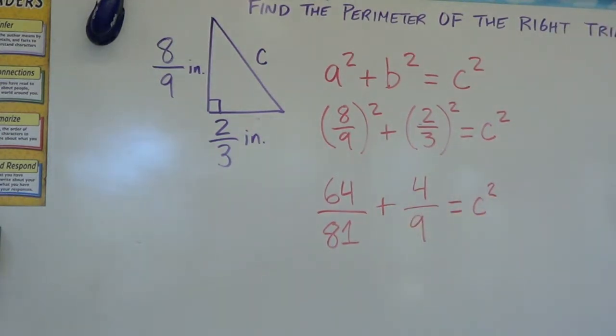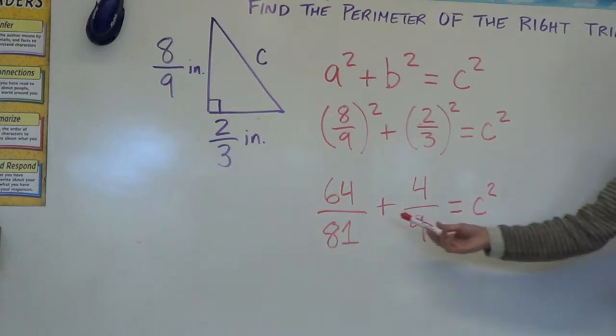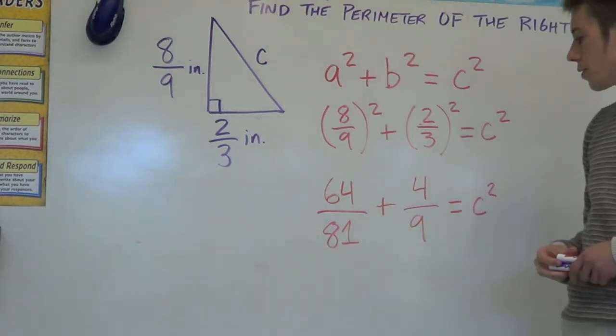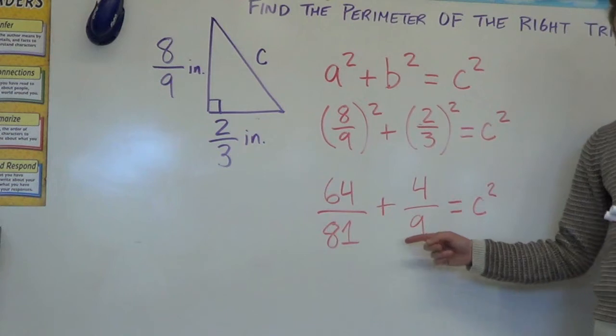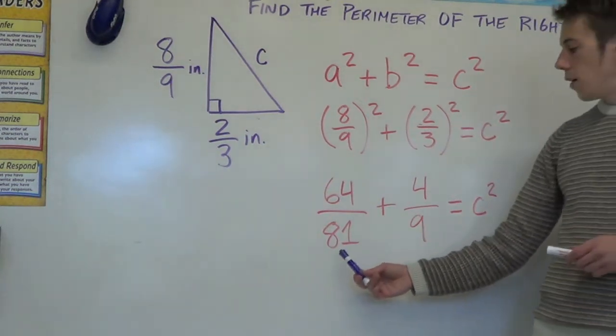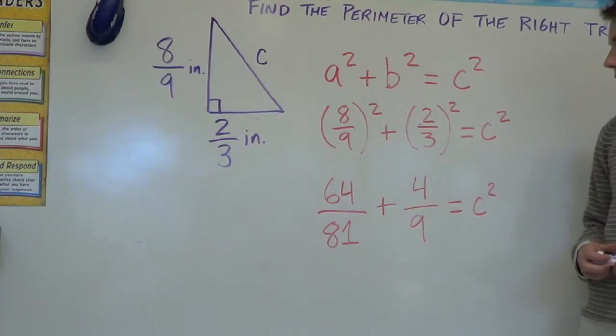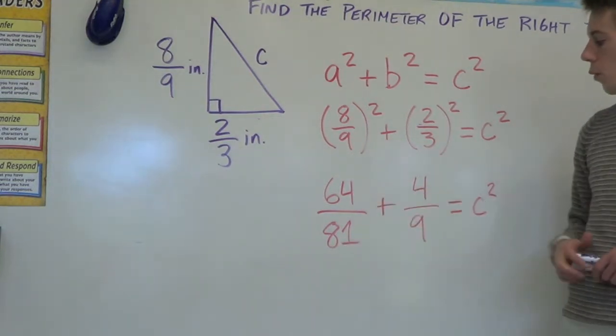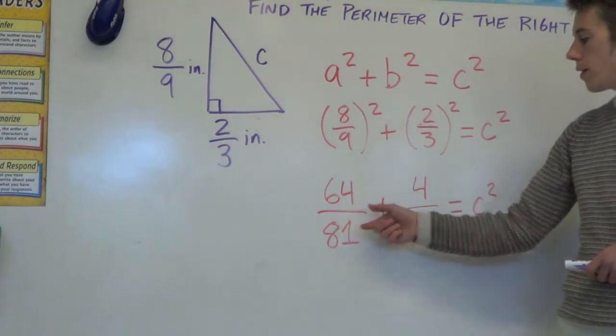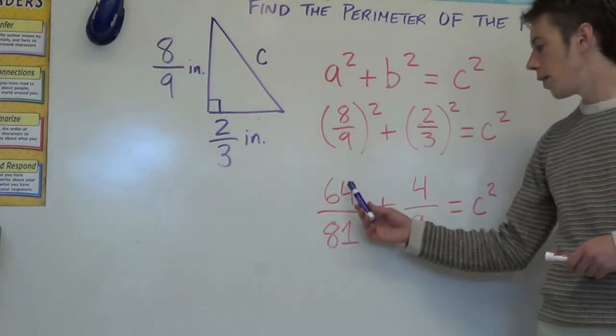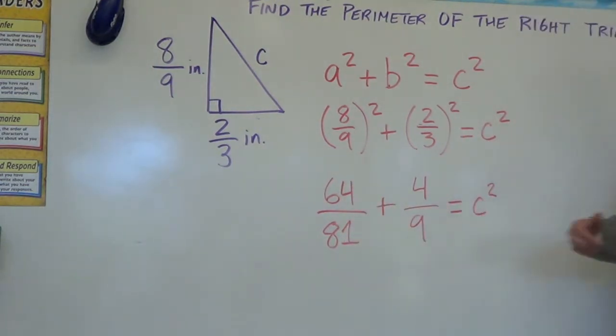When we get to this step, we have to add these two fractions, but they don't have a common denominator. Now, 81 is a multiple of nine. So if 64 were divisible by nine, we could simplify this to have nine on the bottom, but that's not possible. So we've got to take this fraction, multiply numerator and denominator by nine.